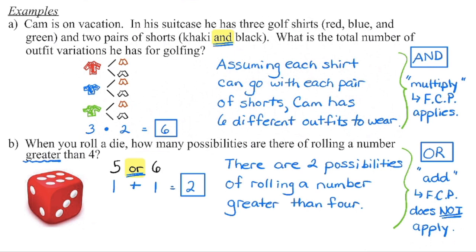In mathematics, the word 'and' generally means that we are going to multiply. The word 'or' generally means that we are going to add. The fundamental counting principle only applies if we see the word 'and' — we are choosing something from this stage and this stage. As soon as we see the word 'or,' the fundamental counting principle does not apply. We can still figure out the answer using logical reasoning, but this is not a case where you use the fundamental counting principle.